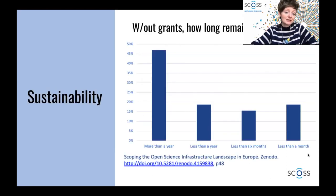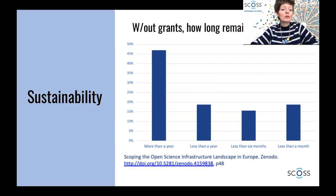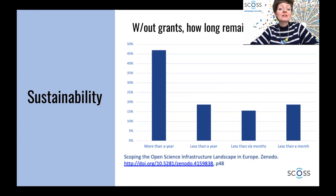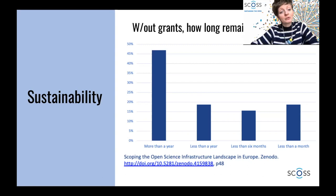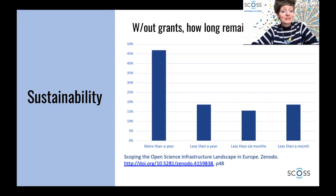Our main aim is to help sustain the infrastructure to support the implementation of open science. We looked very closely at the question of sustainability of open science infrastructure. In a report we published recently, we asked some of the participating infrastructures — both small local ones and large international ones — how long they would be able to remain viable without grants or funding. The results were rather alarming: almost 20% said they wouldn't be able to make it for more than a month, and almost 50% said they would remain viable for more than a year only, which of course is not a long-term plan.